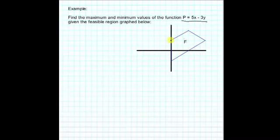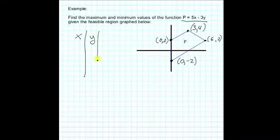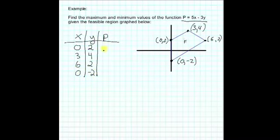So remember, our optimum values will be at the vertices. So at this vertices, the coordinates are 0, 2. This vertices, the coordinates are 3, 4. At this vertices, our coordinates are 6, 2. And at this vertices, our coordinates are 0, negative 2. The easiest way is to form a table where we input our x, our y values, and we then compute our objective function for each of those. So if we fill in our table, we have 0, 2, 3, 4, going around the diagram, 6, 2, and 0, negative 2.